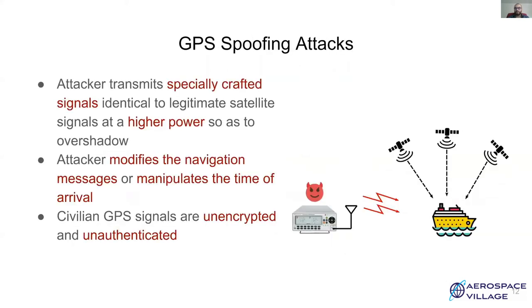There are two primary types of GPS attacks. Jamming attacks, where the attacker transmits high powered noise, which causes a denial of service attack, and spoofing attacks, where the attacker transmits a signal such that the receiver calculates a false location. In this demonstration, we are going to take a deeper look at GPS spoofing attacks.